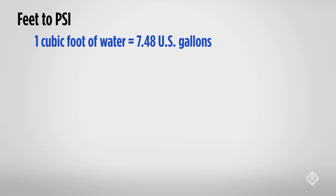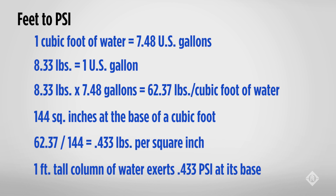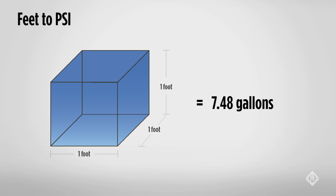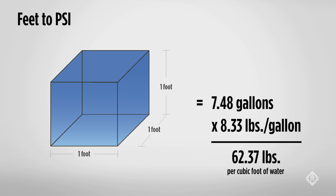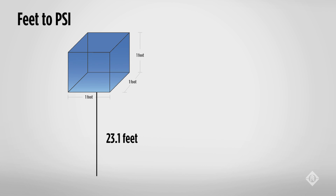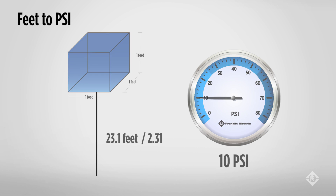So why this exercise? As we size pumps and plumbing, we will work between feet of head and psi routinely and need to be familiar with the units and where they come from. With 1 cubic foot of water holding 7.48 gallons, and the weight of 1 gallon of water being 8.33 pounds, we get 62.37 pounds per cubic foot of water. Don't become confused with mass and pressure — if we lift 1 cubic foot of water to 23.1 feet of elevation, we will only generate 10 psi of pressure at the bottom, as opposed to the 62.37 pounds of mass that we lifted up in the air.